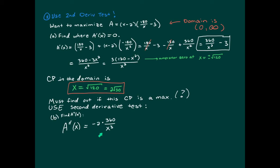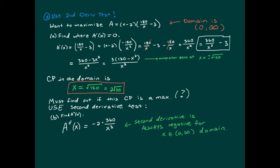To take the second derivative, we go back to the unsimplified version since it's better for differentiation. Since x must be positive in this context, x cubed is also positive. The second derivative overall has a negative times a positive divided by a positive, so the second derivative is always negative. This means the function is concave down, confirming that x equals 2 square root of 30 gives a maximum — exactly what we were trying to find.